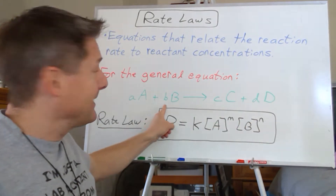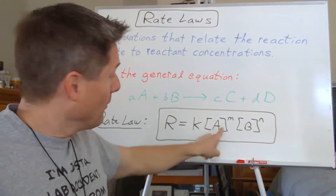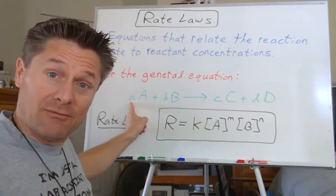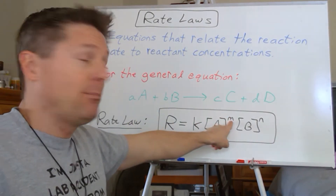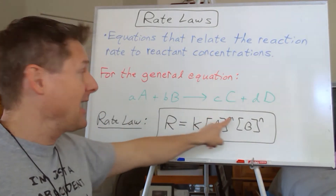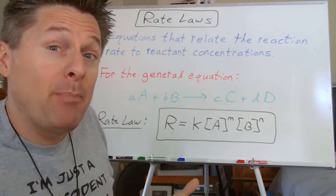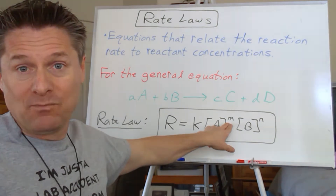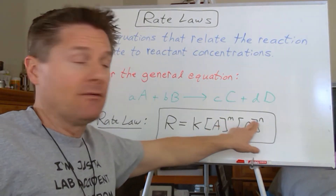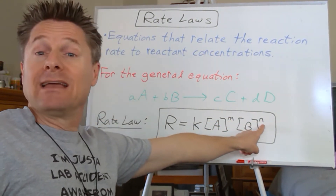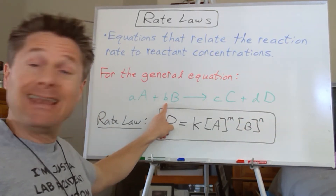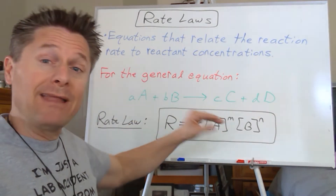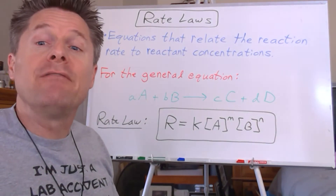We are not going to put little a and little b as those exponents, because what we raise the concentration of reactant A to is not necessarily equal to the balanced stoichiometric coefficient. So I'm not going to write little a there — theoretically it could be equal, but not necessarily. Same goes for reactant B: n is not necessarily the stoichiometric coefficient.